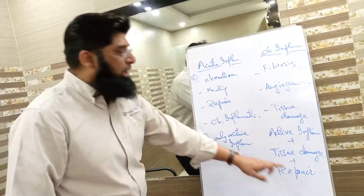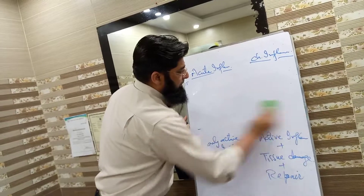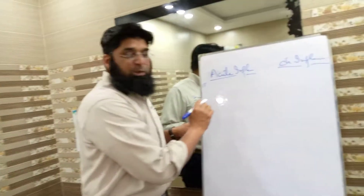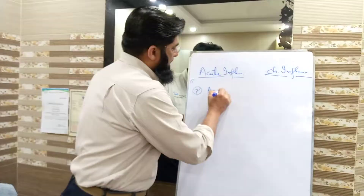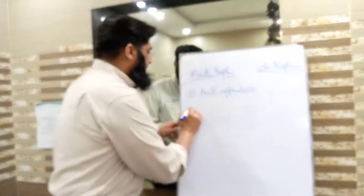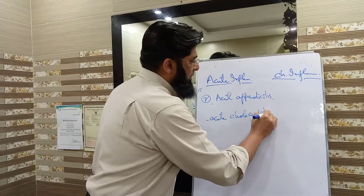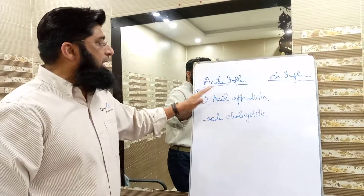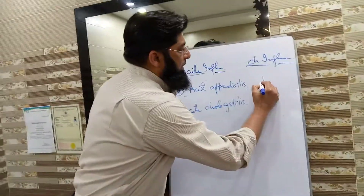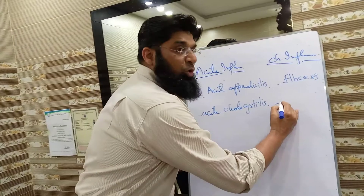Clinical examples of acute inflammation: acute appendicitis and acute cholecystitis. Whereas the examples of chronic inflammation include abscess formation and granuloma formation.